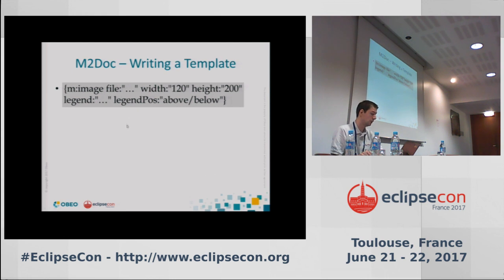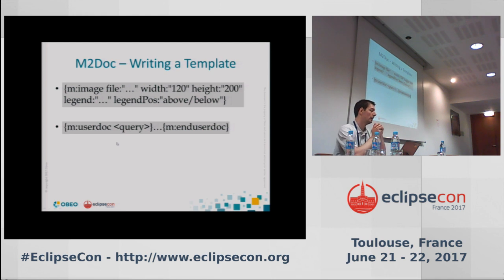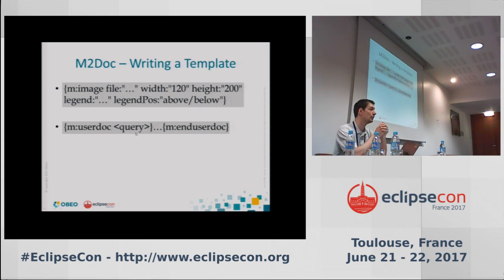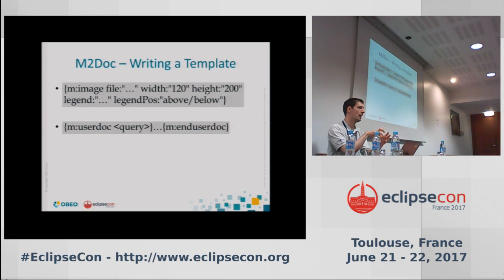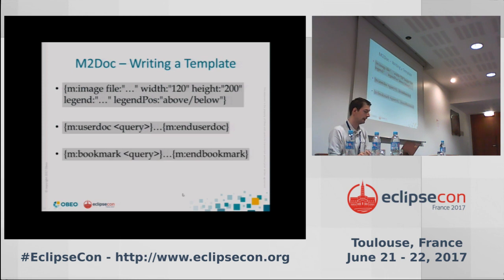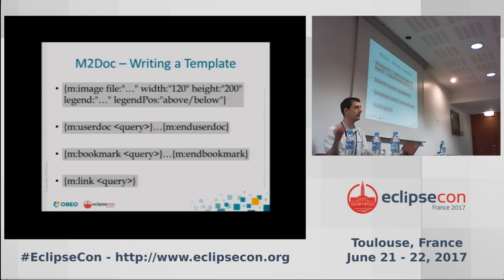M2Doc uses the ID of each user text area to find, in the former document, the text entered by the end user, put it aside, regenerate, and reinsert it in the right place. You can also use bookmarks and links — like anchors in HTML — so you have a bookmark somewhere and links that navigate to it. This makes documents navigable, much like hyperlinks in a web page.